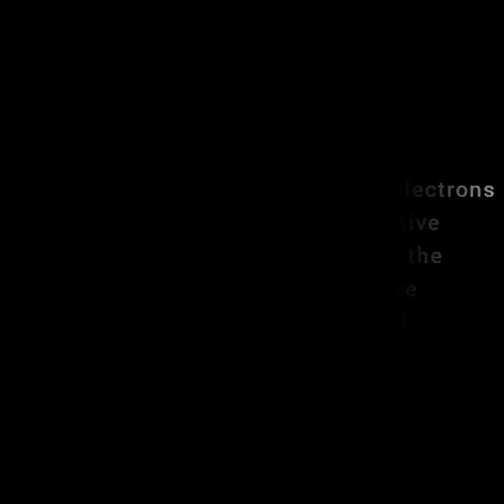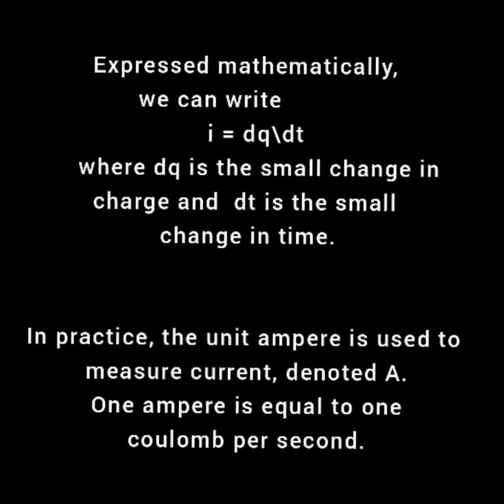Expressed mathematically, we can write I = dq/dt, where dq is the small change in charge and dt is the small change in time. In practice, the unit ampere is used to measure current, denoted by A. 1 ampere is equal to 1 coulomb per second.